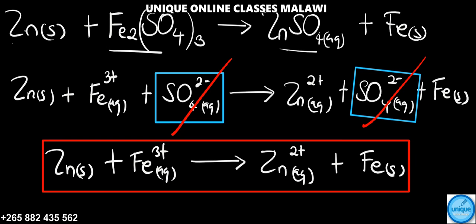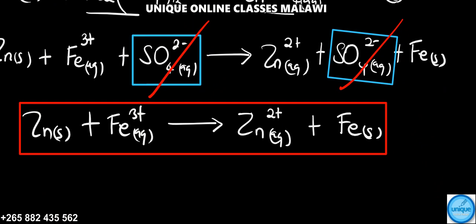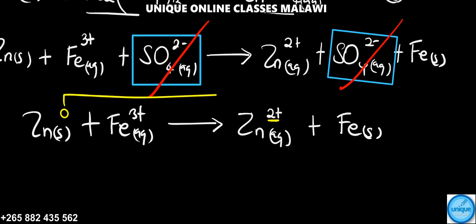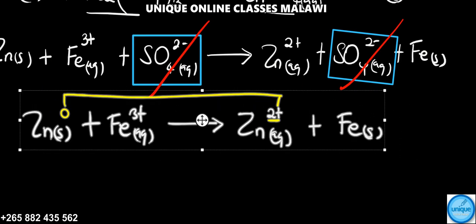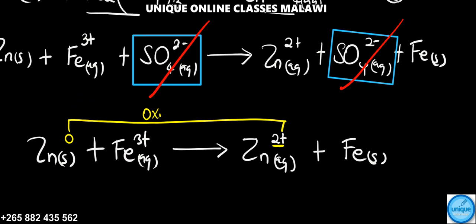Let's see the other question. We should identify oxidizing and reducing agents. Now looking at zinc, we have zero oxidation number going to +2. So zinc has been oxidized.